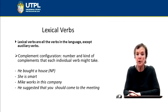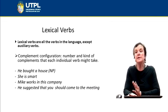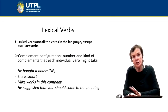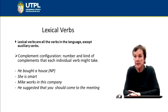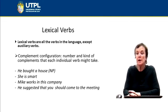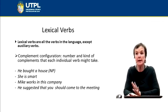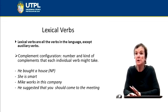Here it is important to talk about what is complement configuration. Complement configuration refers to the elements that follow a lexical verb — the types of complements that each lexical verb might take. For instance, if we say 'he bought a house,' the complement of the verb buy is 'a house.' So we can say that the complement configuration of the verb buy is verb plus NP. In this case, the complement configuration has a noun which is functioning as the direct object of the verb buy.